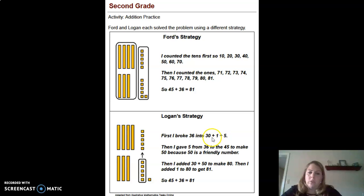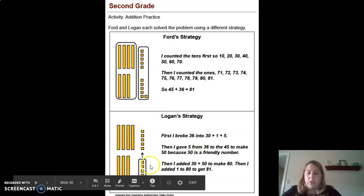He broke his 36 into expanded form. Well, it's not completely expanded form, but 30 plus one plus five. So he took this group of five and combined it with the five from the 45.